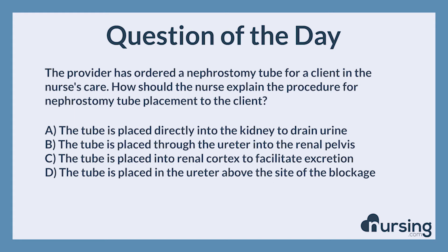The correct answer is A: the tube is placed directly into the kidney to drain urine. In nephrostomy tube placement, the tube is placed directly into the kidney in order to drain urine. Any handling of the nephrostomy tube must include strict asepsis by the nurse, since the tube is placed directly into an internal organ.